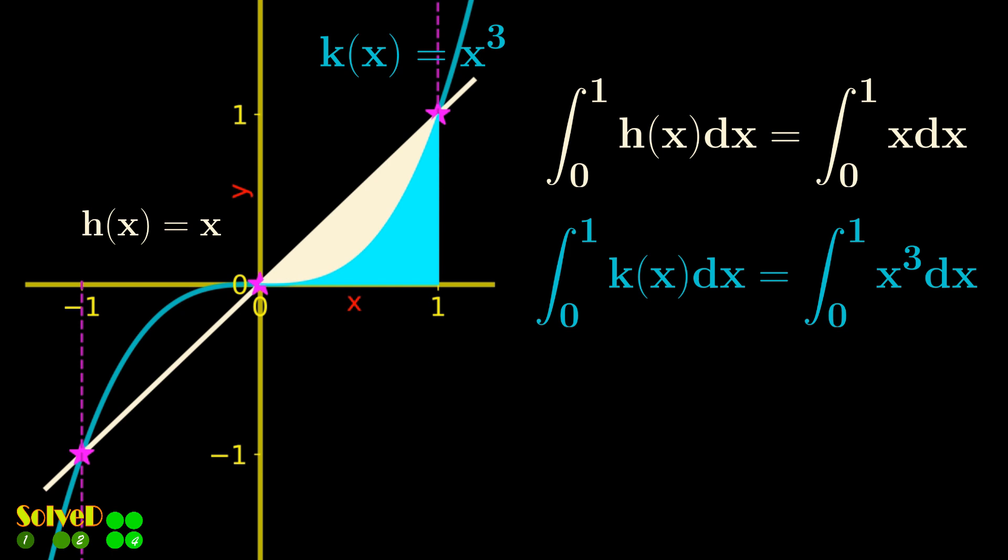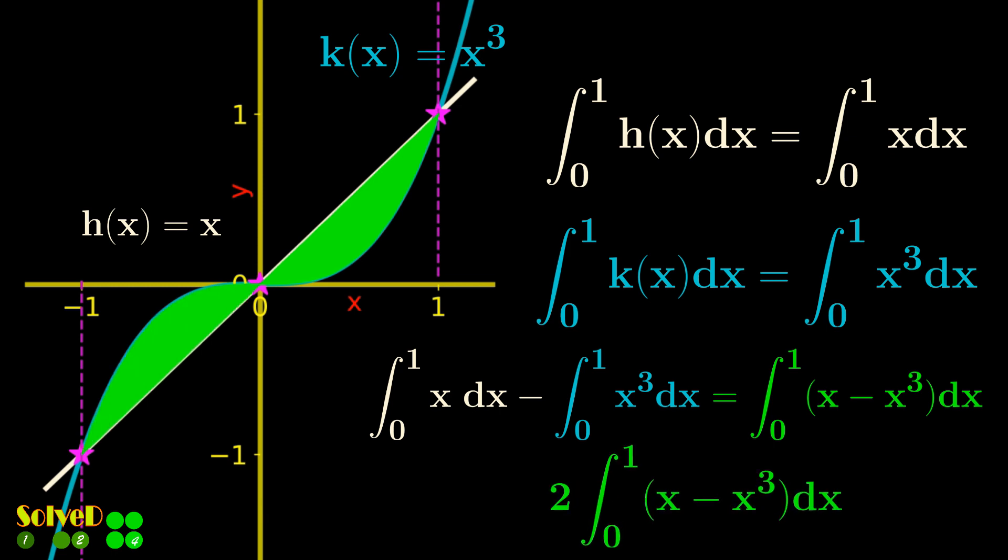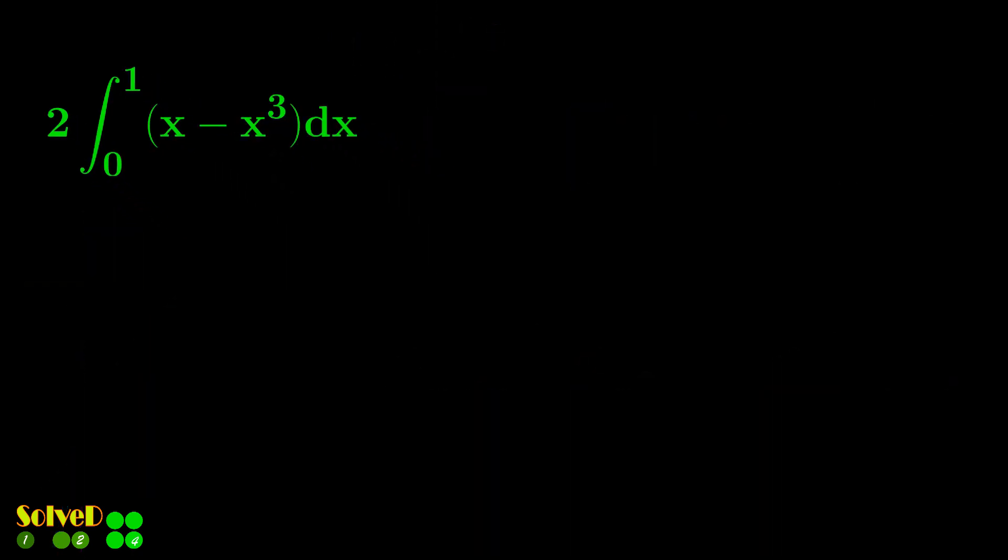Let's subtract the blue area from the white one. This gives the area enclosed between the two graphs between points 0 and 1. Due to symmetry, we can multiply this by 2 to obtain the total enclosed area.